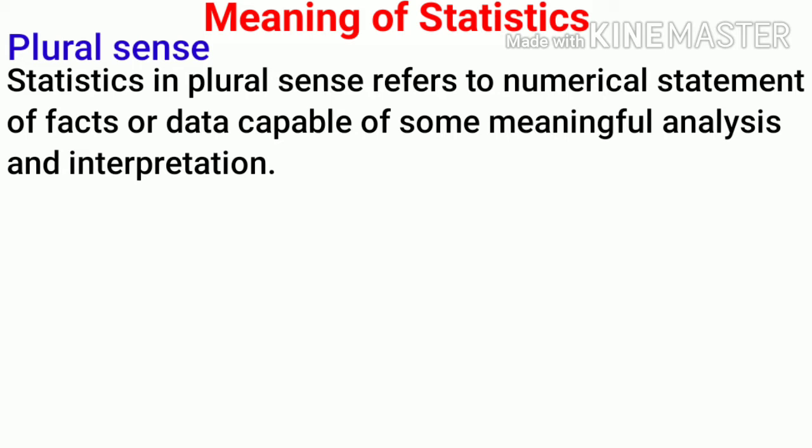This is Ram's height and Shyam's height. Ram's height minus Shyam's height - this is the meaning of analysis or interpretation. This means that Ram's height is 4 inches more than Shyam's height.